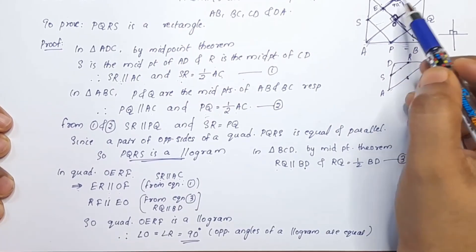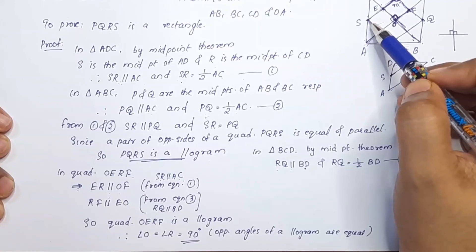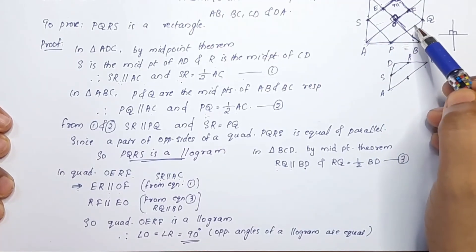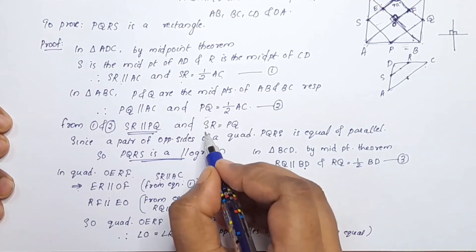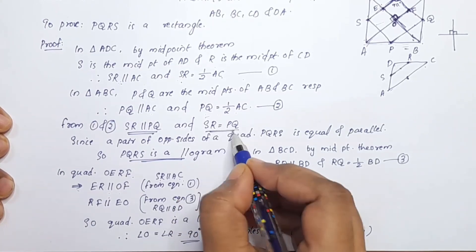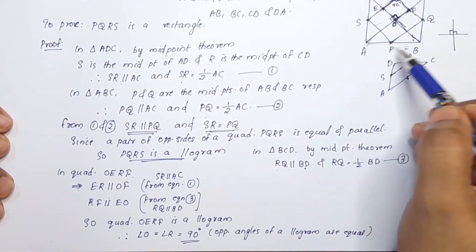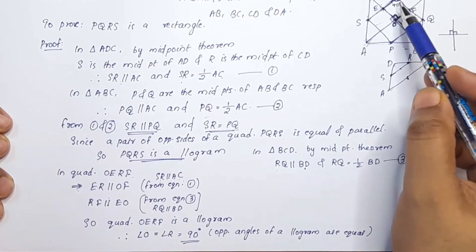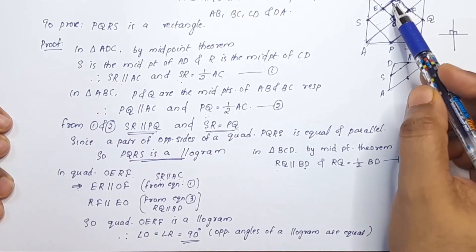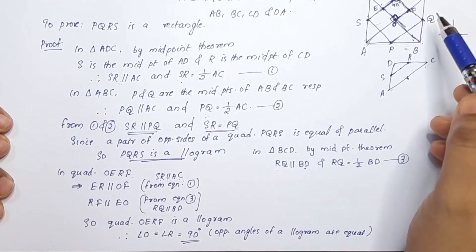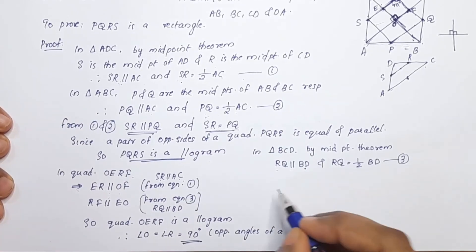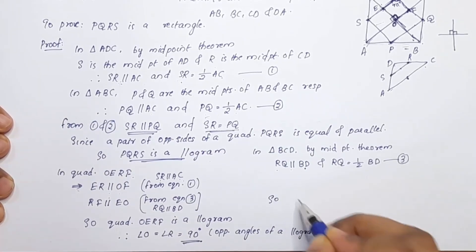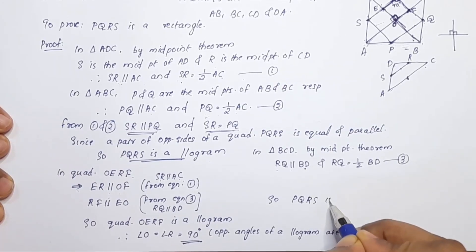Therefore PQ is parallel to SR, PQ is equal to SR, and the parallelogram PQRS has one angle equal to 90 degrees. Therefore PQRS is a rectangle.